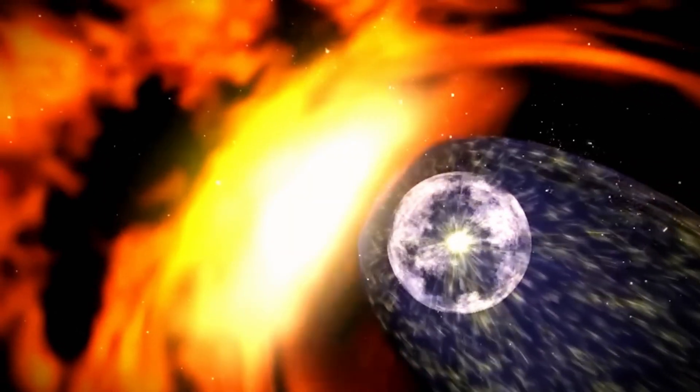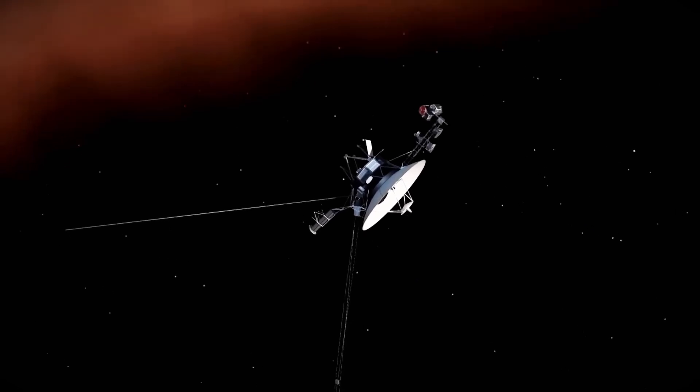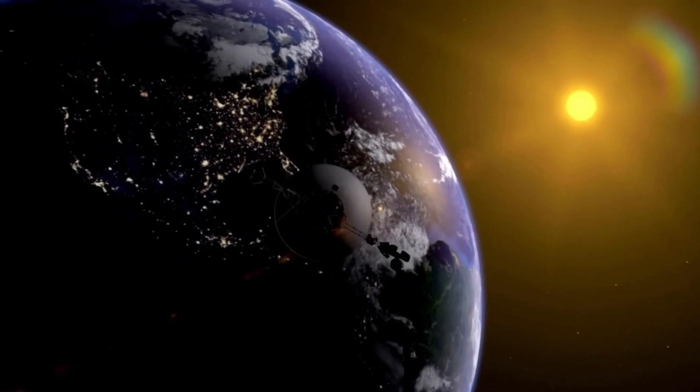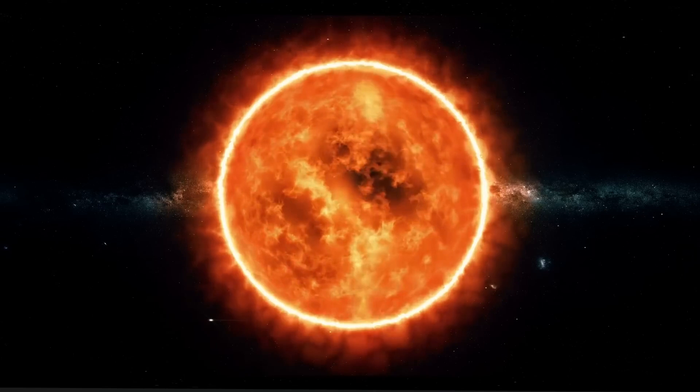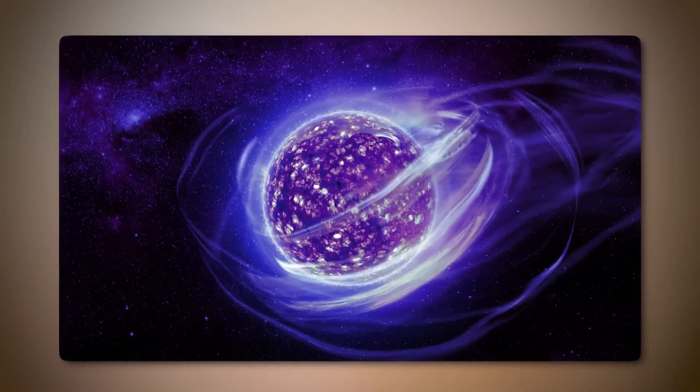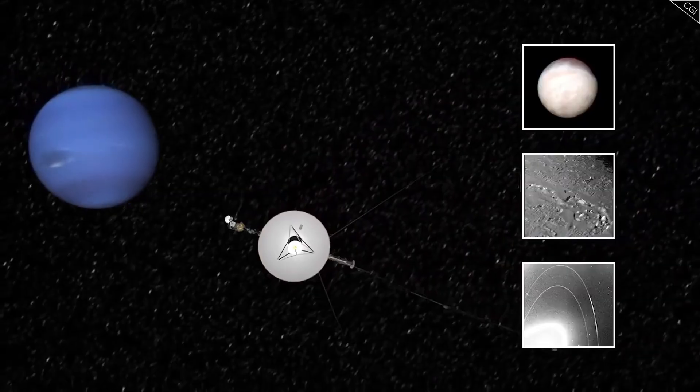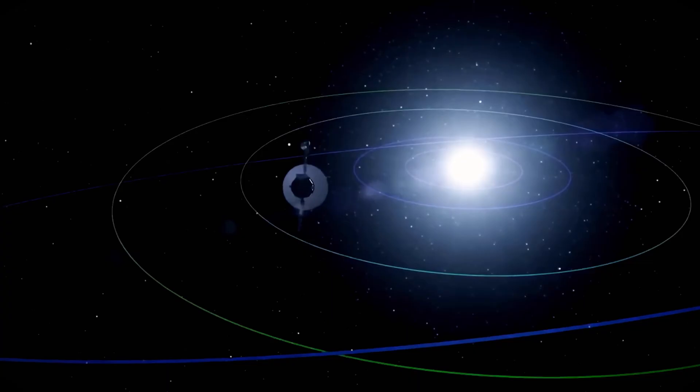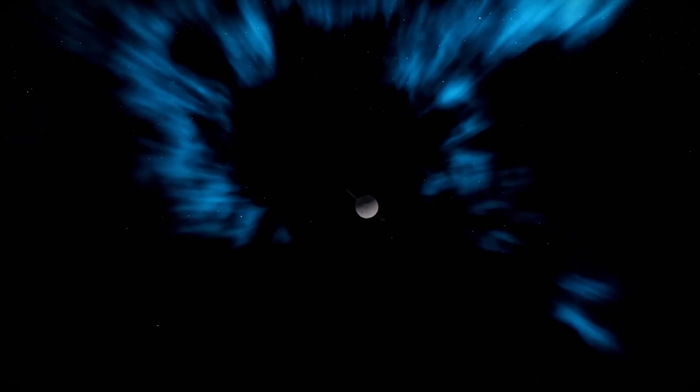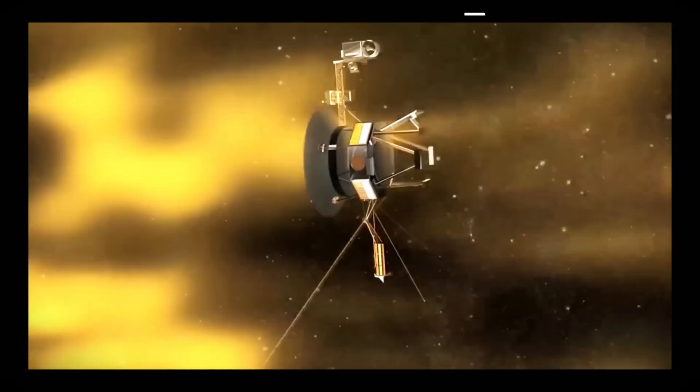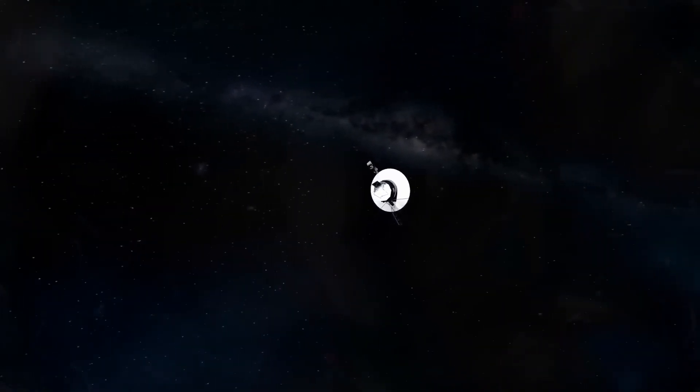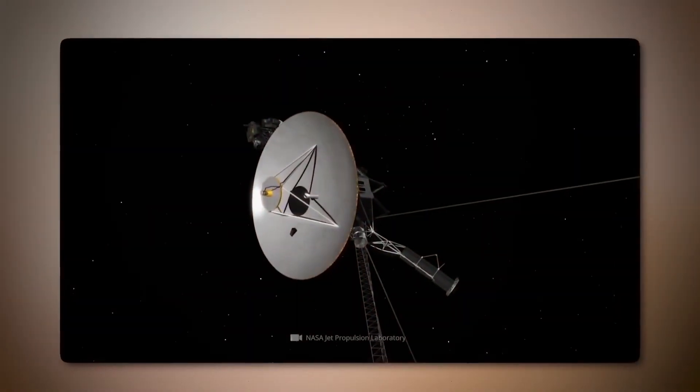Voyager 1's revival of a 43-year-old transmitter: In a stunning display of engineering foresight, NASA's Voyager 1 spacecraft recently communicated using a backup radio transmitter that had been dormant since 1981. This milestone highlights the ingenuity and resilience of the spacecraft, which is now over 15 billion miles from Earth. In October 2024, Voyager 1 experienced a communication anomaly when it unexpectedly ceased sending data via its primary X-band transmitter. Engineers detected a faint signal from the spacecraft using the backup S-band transmitter, which had not been in use for 43 years.